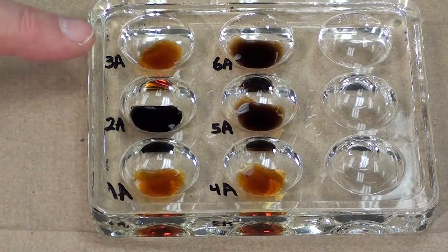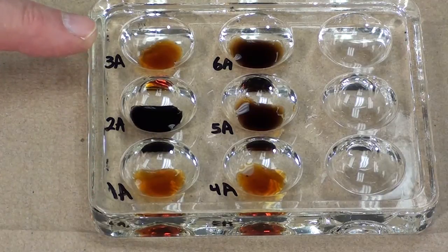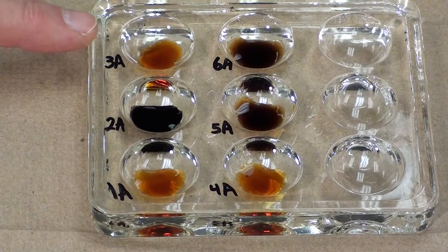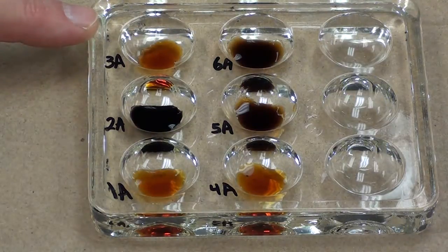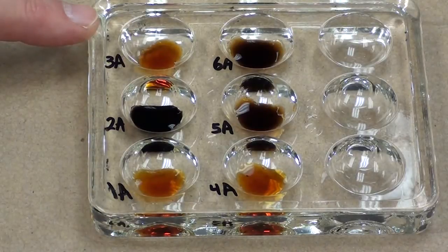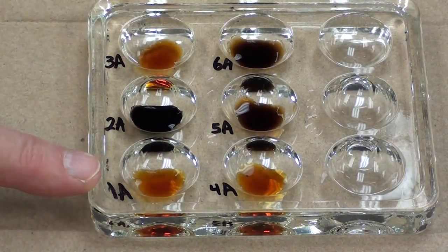If we review what was placed in each of these tubes, we'll discover whether or not the starch has disappeared. Test tube 1 contained amylase enzyme and water. No starch was ever present.